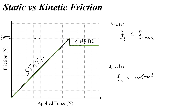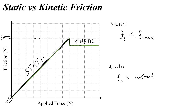Returning to our static friction note — static friction doesn't have to equal the maximum value; it varies from zero to some maximum. When we talk about the coefficient of static friction, it relates to the maximum. So we can say static friction is always less than or equal to mu s times the normal force. You can use the static coefficient of friction multiplied by the normal force to find what that maximum is.